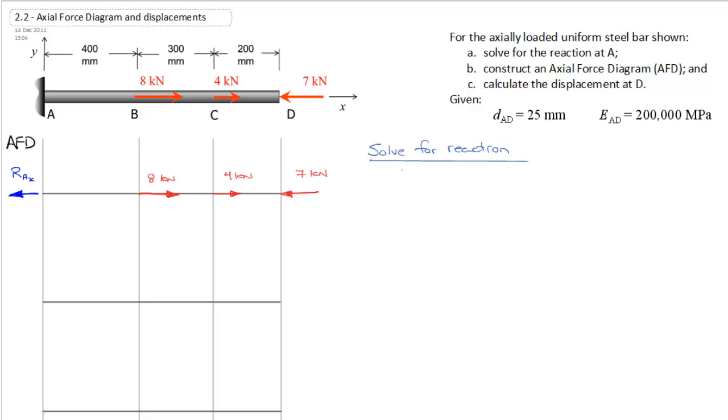And we will apply our single equation of static equilibrium: sum of the forces in the x direction equal to zero. And we will go negative RAx plus eight kilonewtons plus four kilonewtons minus seven kilonewtons. And so we end up with RAx equal to five kilonewtons.